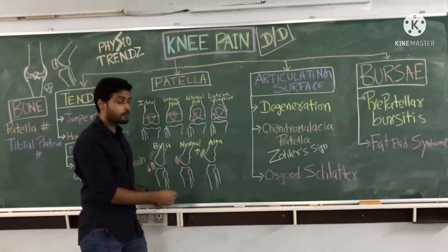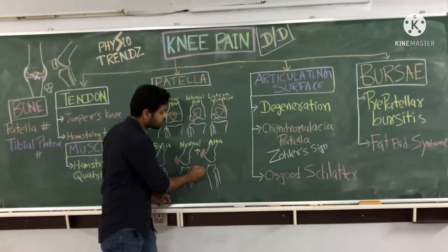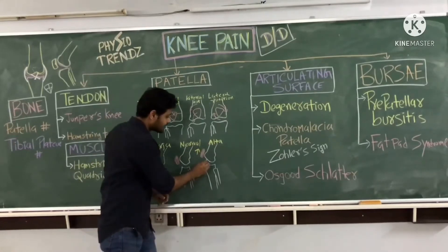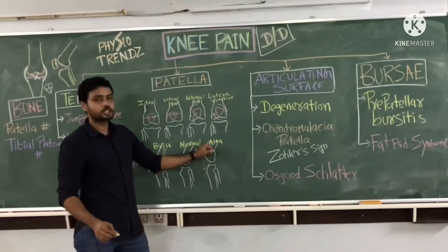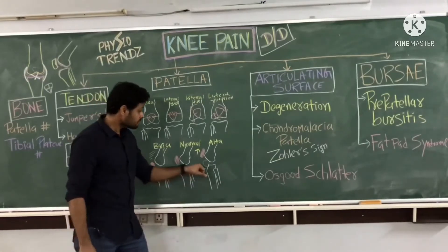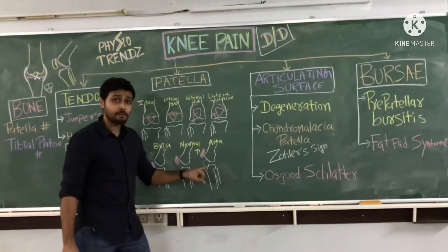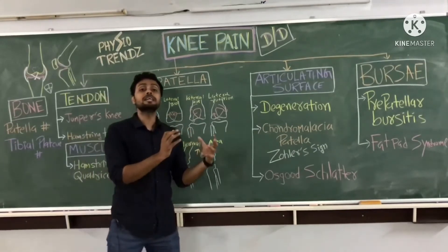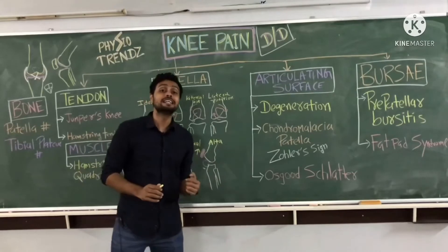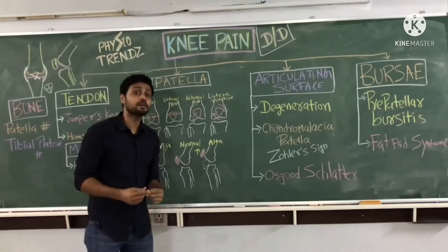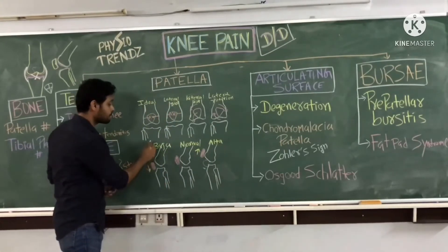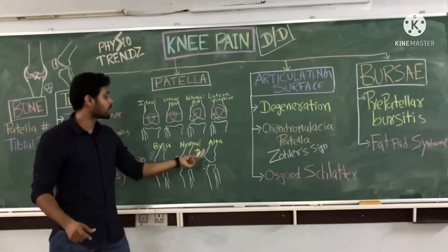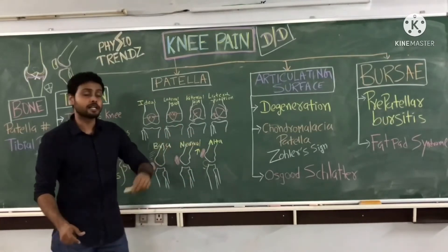Patella alta can occur because of any injury to the patella tendon causing upward shifting, or because of cyst formation which causes upward shifting of the patella. This cyst can be formed because of any injuries near the articulating surface, ligaments, or the meniscus. We need to remember that these are the abnormalities that can be present in the patella — patella baja if the patella is shifting downward and patella alta if shifting upward.